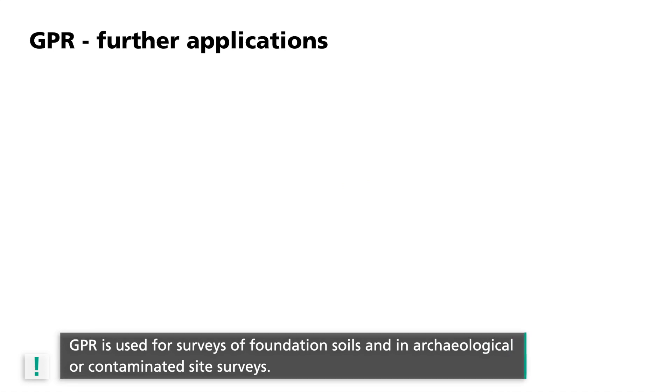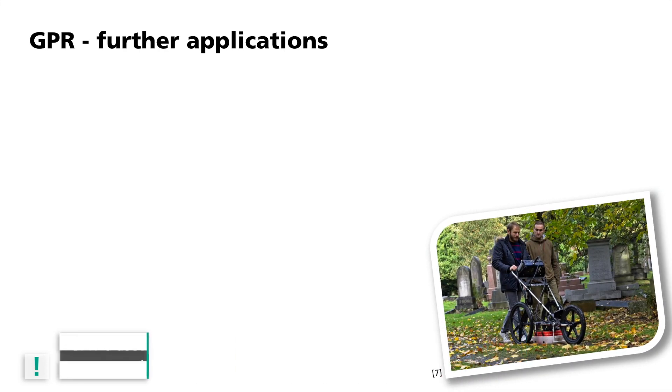Such investigations are of huge importance for preparing construction projects. By using GPR, construction sites can be surveyed quickly and therefore inexpensively. Here, in addition to metallic objects, old foundations can also be located. Alongside surveys of foundation soils, GPR is increasingly being used with a similar objective in archaeological and contaminated site surveys. Here, large-scale measurements can be used to identify anthropogenic objects and structures in the subsurface.